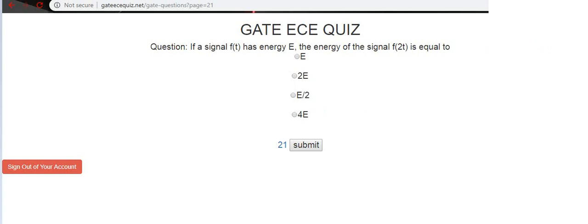Coming to the energy of the signal, energy of the signal E is defined as integral minus infinity to infinity F square of T times dt, where F of T is the signal which we are interested in. We already have signal F of T. Now, let's call it as E1 equal to E which is minus infinity to infinity F square of T dt.